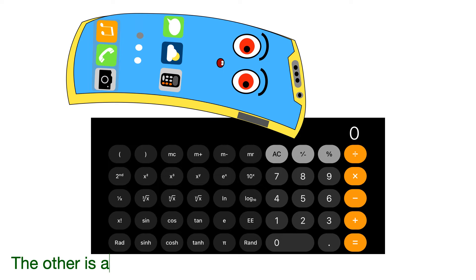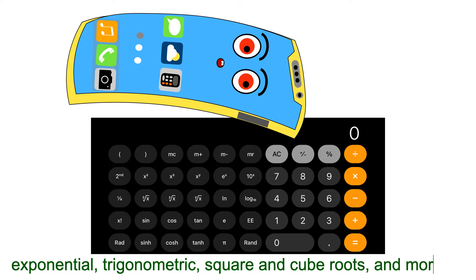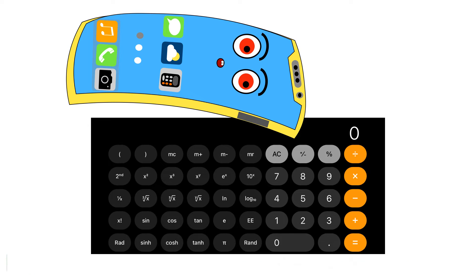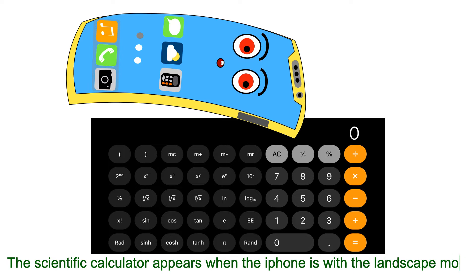The other is a scientific calculator where you can do exponential, trigonometric, square and cube roots, and more. The scientific calculator appears when the iPhone is in landscape mode.